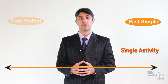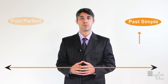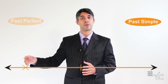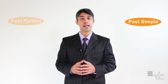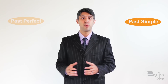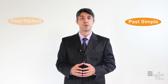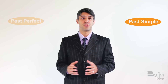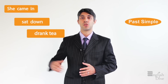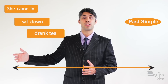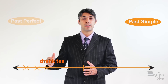When we're talking about a single activity in the past, we just use the past simple. For example, 'I gave her the book.' Moreover, if we're telling a story or just reporting a sequence of events in the past, we use the past simple for all of them. For example, you can say: 'She came in and sat down and drank tea.' So in the timeline, we're just reporting a series of activities in the past.